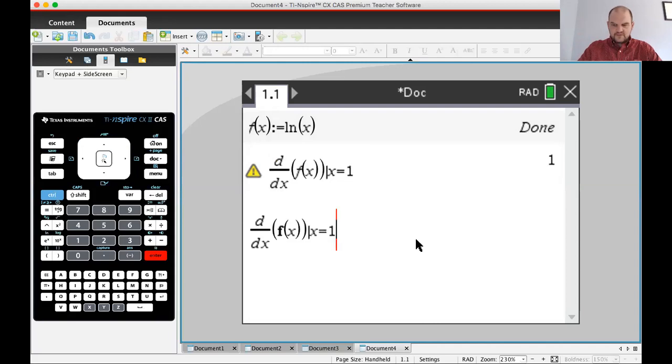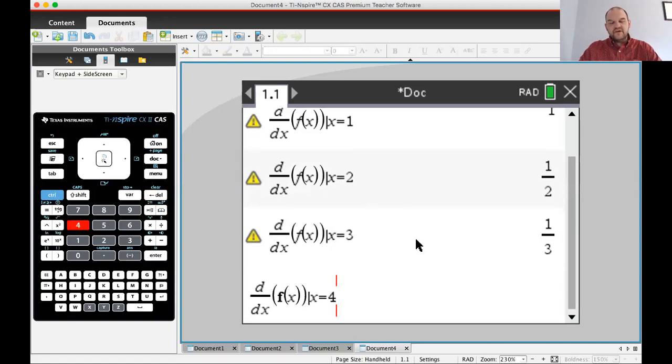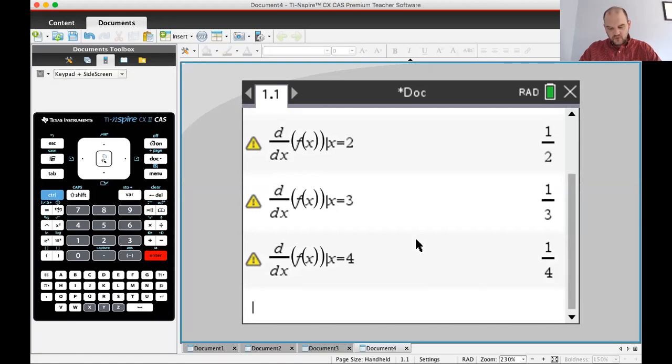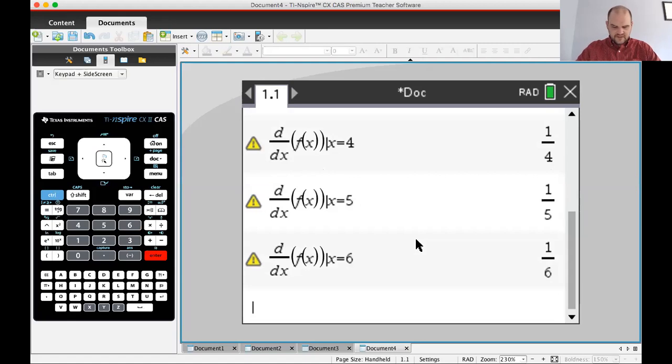Now if I want to keep going, I'm just going to do the values that are in the table. So the derivative at one was one, the derivative at two is one-half, the derivative at three is one-third. This is kind of interesting. The derivative at four is one-fourth. You could probably guess the derivatives now: one-fifth, one-sixth. That's really interesting.